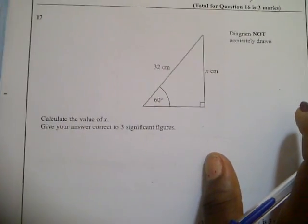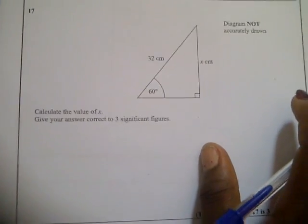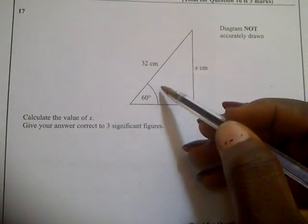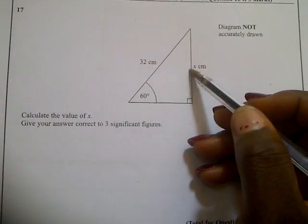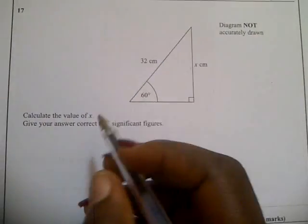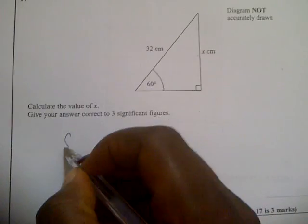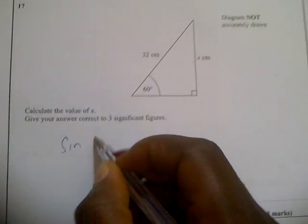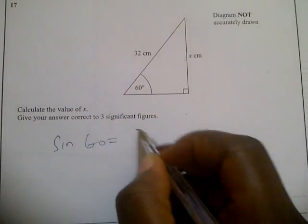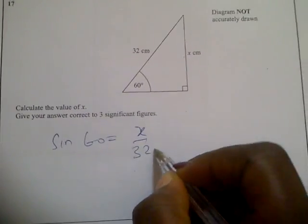Question 17 says calculate the value of x, give your answer correct to three significant figures. x is opposite over hypotenuse which is sine, so you have sine 60 equal to x over 32.